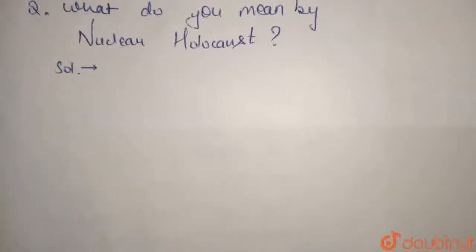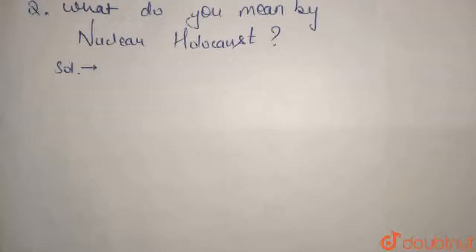So what do we mean by nuclear holocaust? Nuclear holocaust is a type of destruction caused by nuclear weapons. Nuclear weapons are like an atomic bomb — for example, when America attacked Japan, that was a large-scale destruction caused by nuclear weapons. An atomic bomb is a type of nuclear weapon.